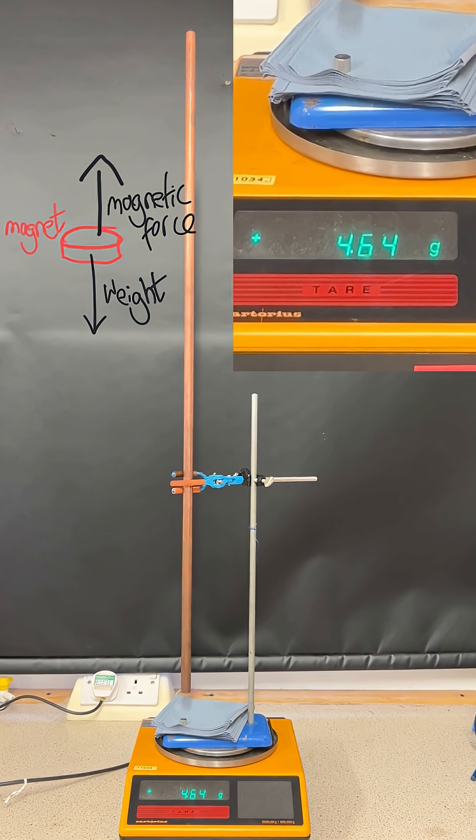But because of Newton's third law, which says when two objects interact they exert equal and opposite forces on each other, if the magnet is experiencing a force up, the copper pipe will experience an equal force down.